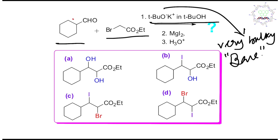In this molecule, there are actually two types of protons which could be abstracted: one is the alpha proton of the aldehyde, and the second is the alpha proton of the ester. Actually, this alpha proton of the ester is expected to be more acidic. Let me discuss everything stepwise — it will be abstracted first and will generate a nucleophile.